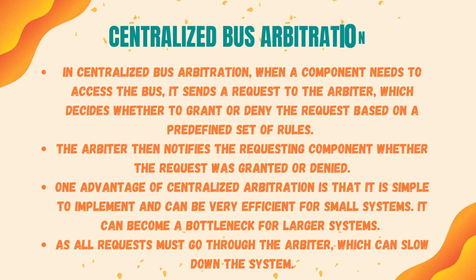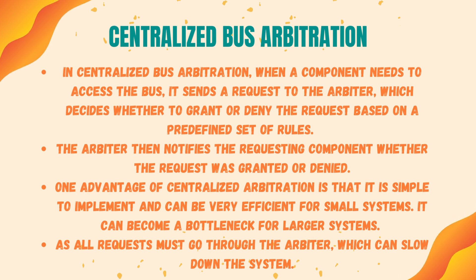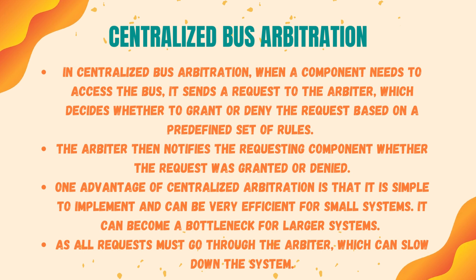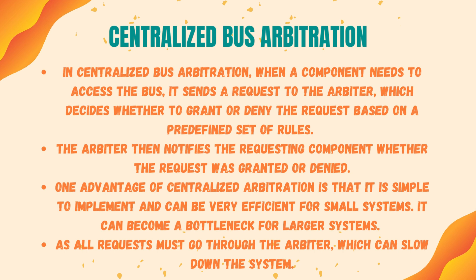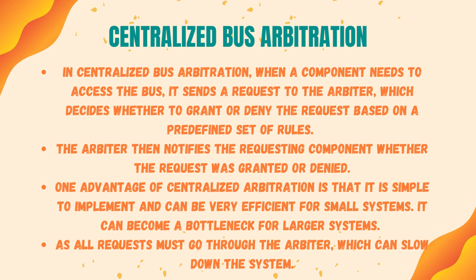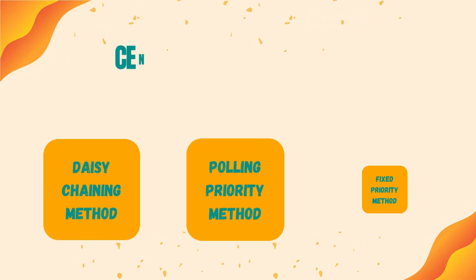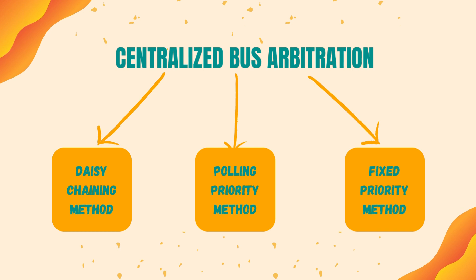In centralized bus arbitration, when a component needs to access the bus, it sends a request to the arbiter, which decides to grant or deny the request based on a predefined set of rules. The arbiter then notifies the requesting component whether the request was granted or denied. One advantage is that it is simple to implement and can be efficient for small systems. However, it can become a bottleneck for larger systems, as all requests must go through the arbiter, which can slow down the system.